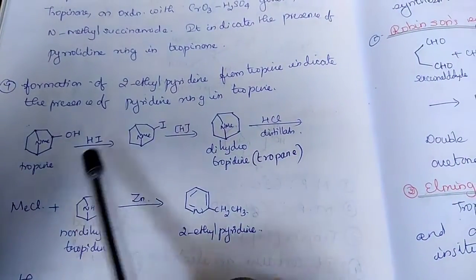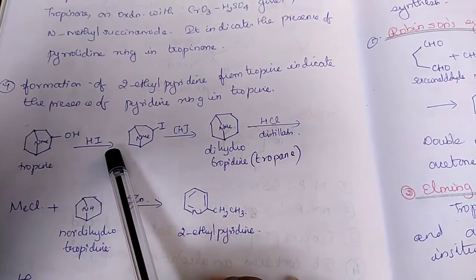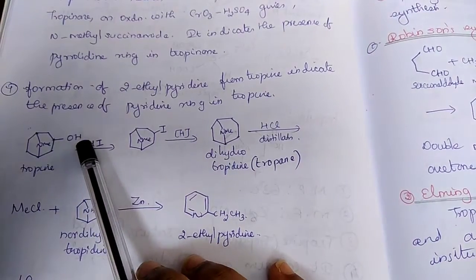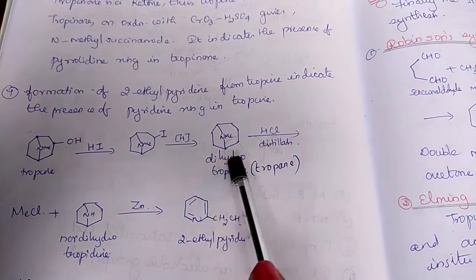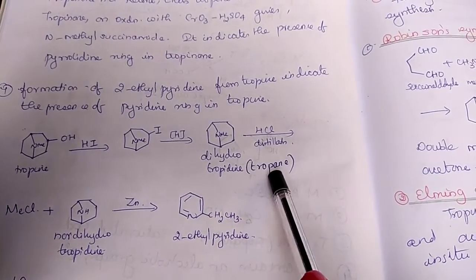And see this reaction, tropine with HI replaces the OH group with iodine. And this on reduction, we get dihydrotropidine, which is nothing other than tropidine.